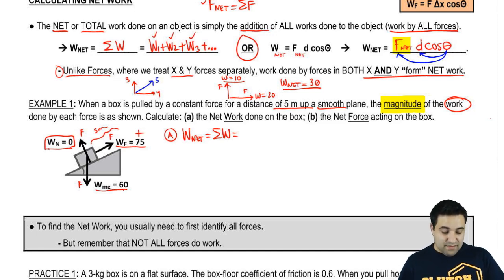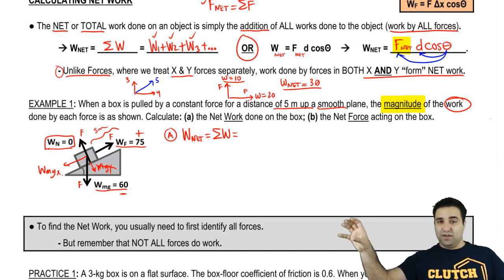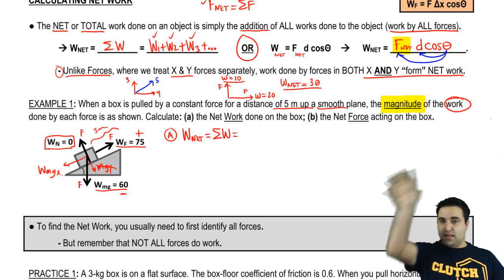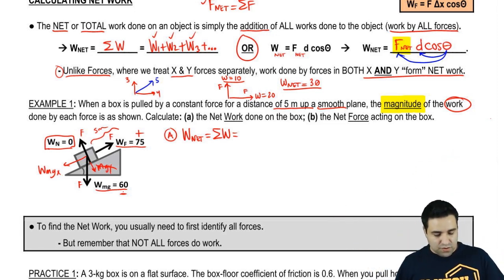This guy goes in the direction of motion, so it's plus 75, and mg is going against motion. The work done by mg is the same as the work done by mgx, against motion. Another way you can remember this is that you are effectively going up, even though you're going at an incline, you're still going up, so when you go up, gravity does negative work against you.